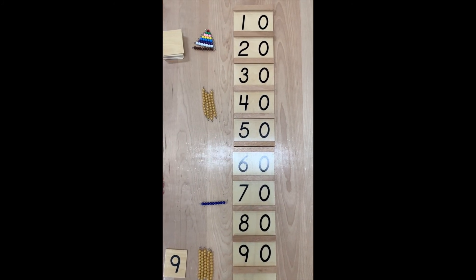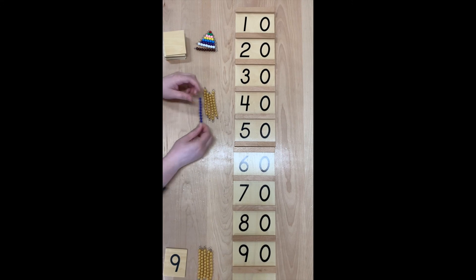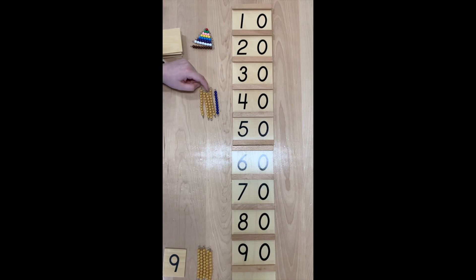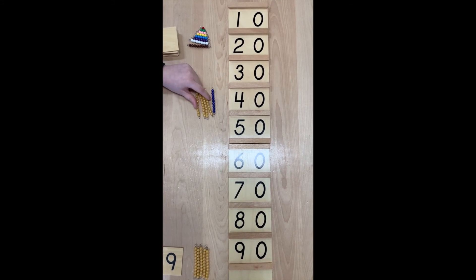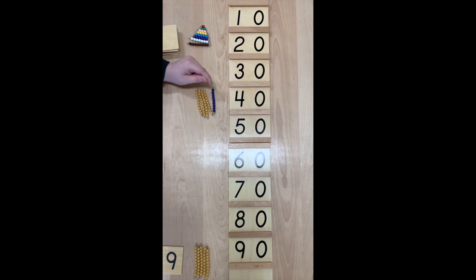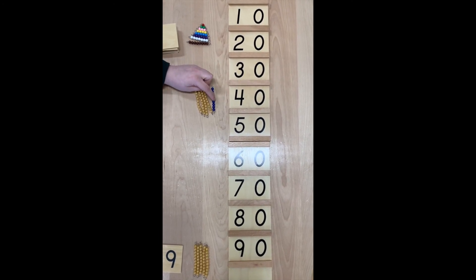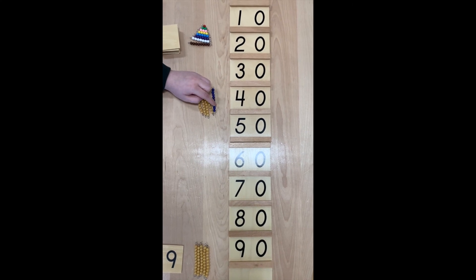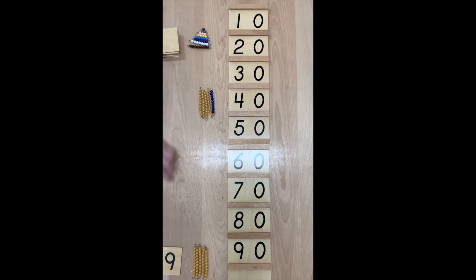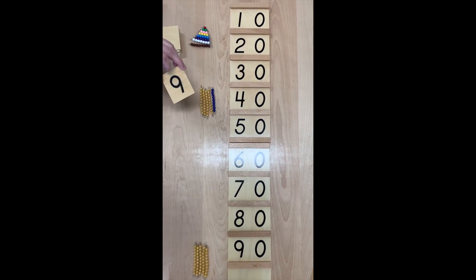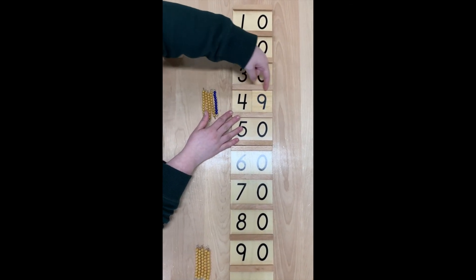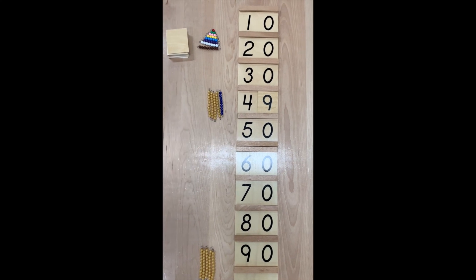What comes after forty-eight? Forty-nine beads — that's our nine-bar: ten, twenty, thirty, forty, forty-one, forty-two, forty-three, forty-four, forty-five, forty-six, forty-seven, forty-eight, forty-nine. Forty-nine beads with the number nine. Forty-nine. That's our forties.